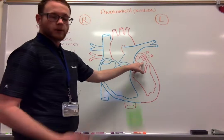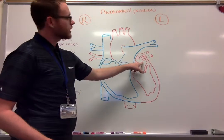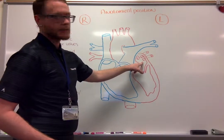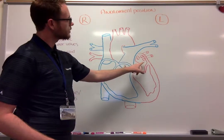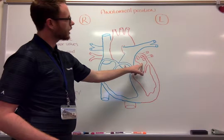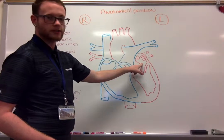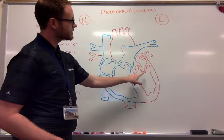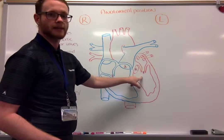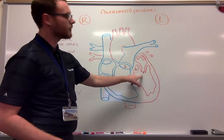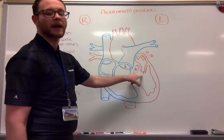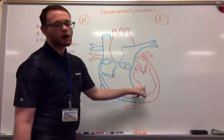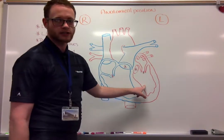Moving forward, now that we have oxygenated blood, we want to get it to the systemic circuit. So through our left atrium, we are going to pass our bicuspid — our mitral, our bicuspid valve — into our left ventricle.